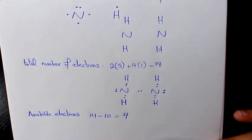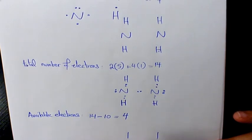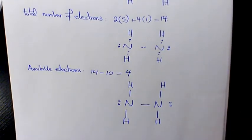So with hydrogen, hydrogen, hydrogen, hydrogen on each nitrogen — that's going to be the Lewis structure of N2H4. I hope you enjoyed this video. Please leave me a comment if you have any questions. Thank you for watching and have a great day.